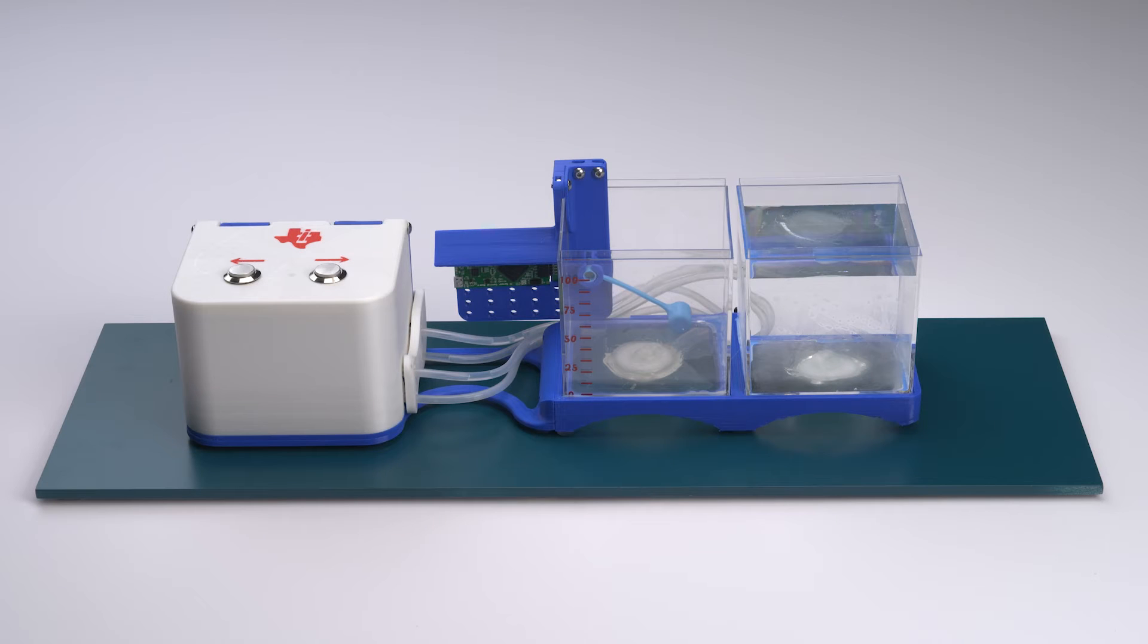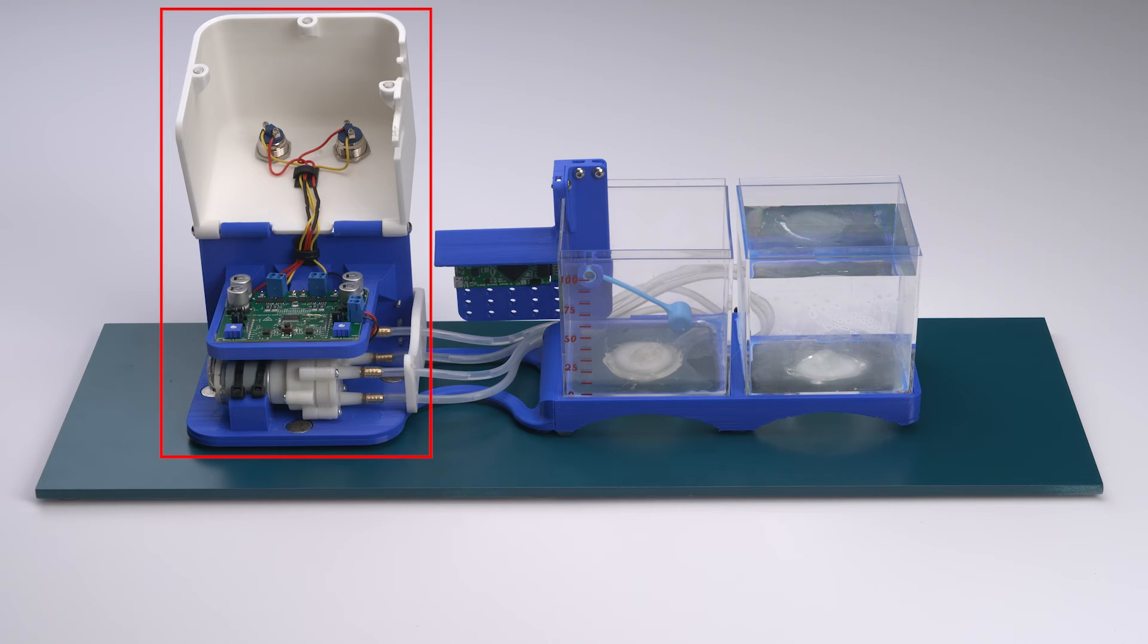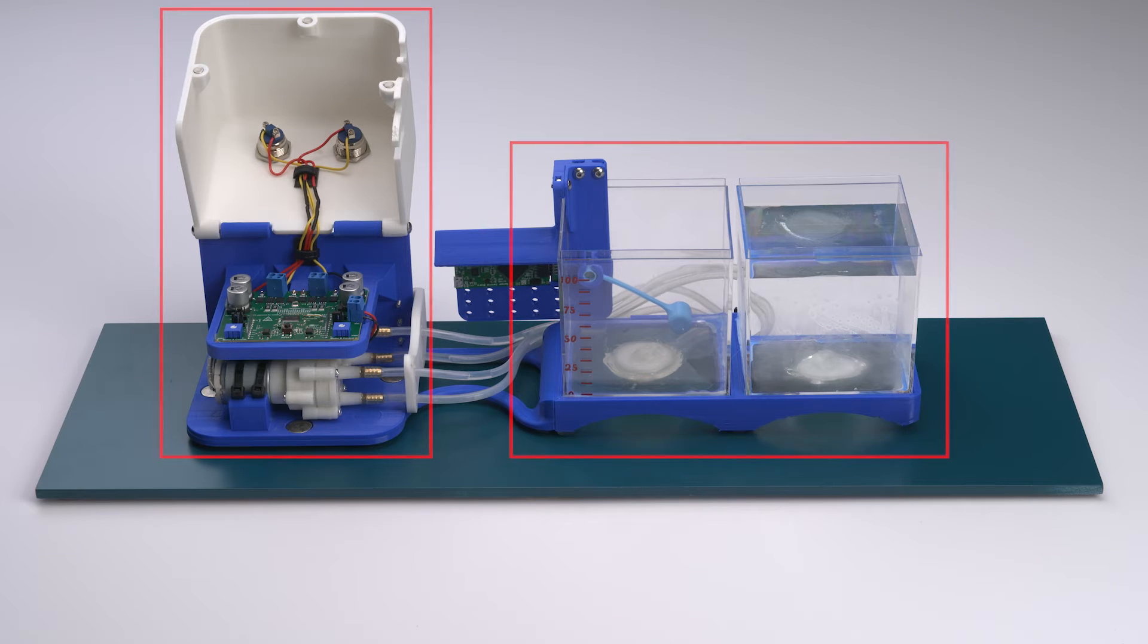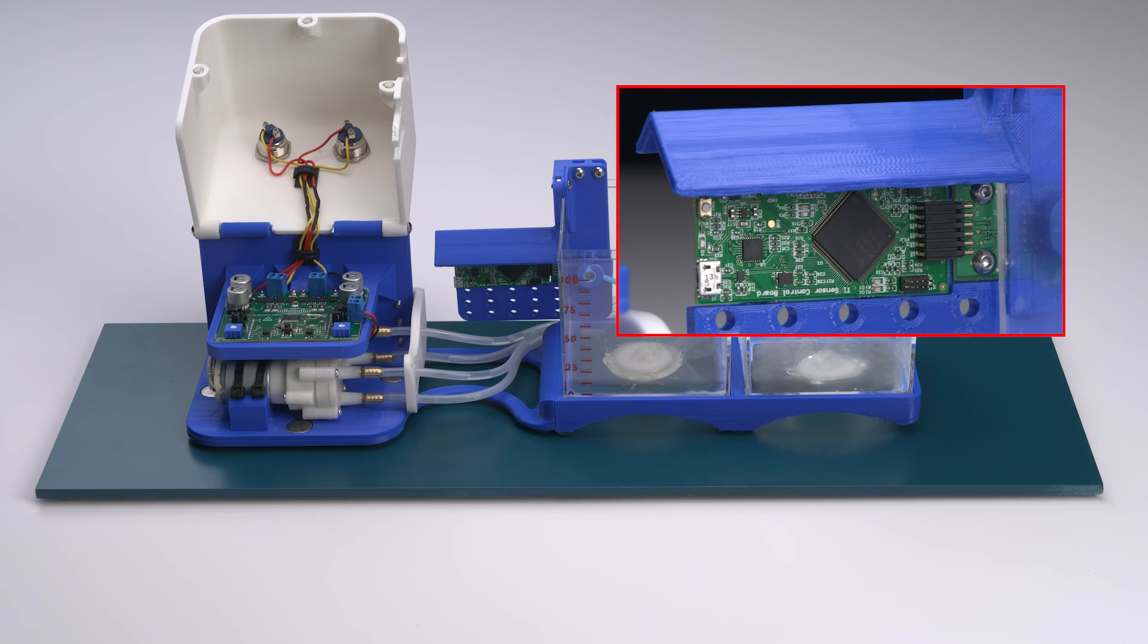A functional prototype was built for demonstrating liquid level sensing using the TMAG5273. The white box has a DRV8704 motor driver EVM along with a pair of self-priming water pumps that are used to transfer the water from one tank to the other. The tank on the left includes the TISCB along with a TMAG5273 EVM.